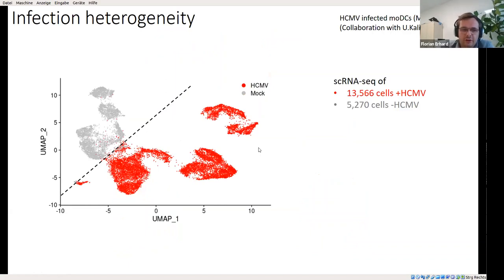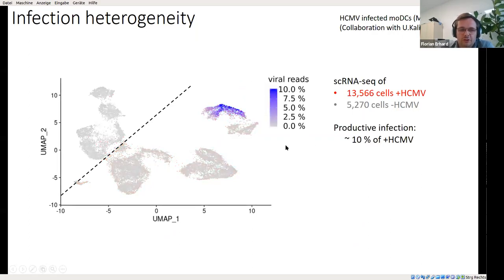First we thought that single-cell RNA sequencing is the perfect method for investigating that. However, it suffers from a limitation I'd like to demonstrate with an example. This is data obtained in collaboration with Emanuel and Ulrich Kalinke — dendritic cells infected with cytomegalovirus and also control cells that were not infected. If you look at the total percentage of viral gene expression, only a minor fraction of the infected cells is productively infected and shows clear signs of viral gene expression. What you'd like to know is what was the difference for these cells compared to all the others at the time of infection.